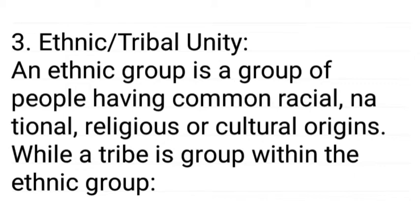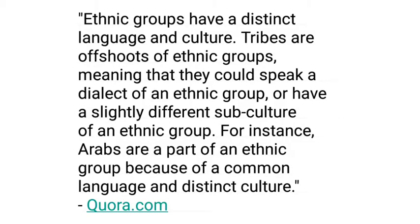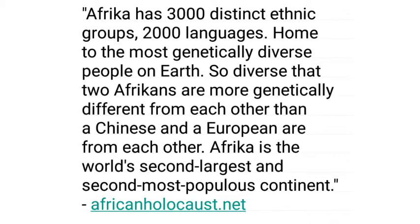Three: we have the ethnic and tribal unity of Africans. An ethnic group is a group of people having common racial, national, religious, or cultural origins, while a tribe is a group within the ethnic group. Ethnic groups have a distinct language and culture. Tribes are subsets of ethnic groups, meaning they could speak a dialect of an ethnic group or have a slightly different subculture. Ethnic groups are larger than tribes; within an ethnic group you have different tribes that make up the ethnic group.